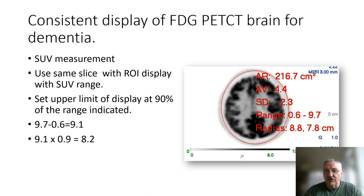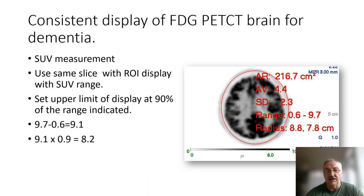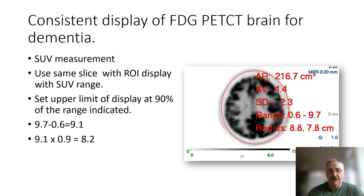The second method is entirely practical. We choose the same slice, take a region of interest of that single slice — not a volume of interest — and set the upper limit at 90% for that slice alone. So here we've got a range of 0.6 to 9.7. That's a total SUV span of 9.1. We choose 90% as the upper level, giving us a range of 0 to 8.2. You can see this turns out to be similar to the experiential assessment.